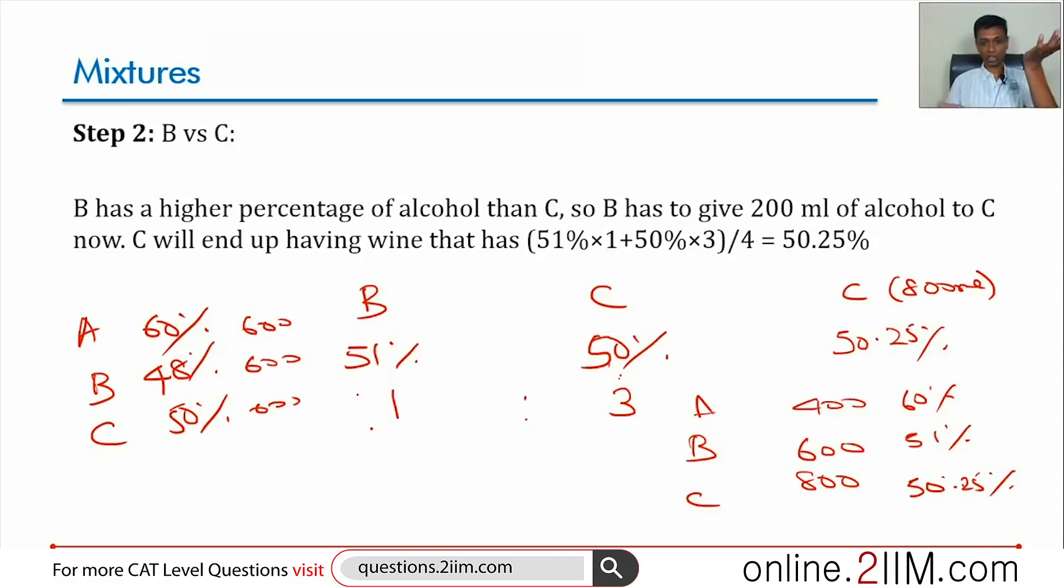I'm shifting from higher percentage to lower percentage. This will go up but this can never catch up with this. It will always be lesser. So between the two people, this person keeps giving higher percentage to lower percentage. This will keep increasing and then it'll finally run out. It'll never catch up with this or exceed this. So finally one person is going to have all the alcohol, all 1800 ml of it, (60 + 48 + 50)/3 percentage of it. Very simple question once we crack that idea.